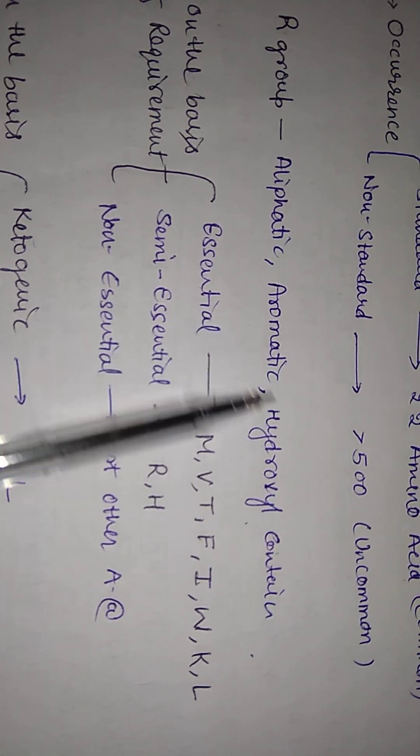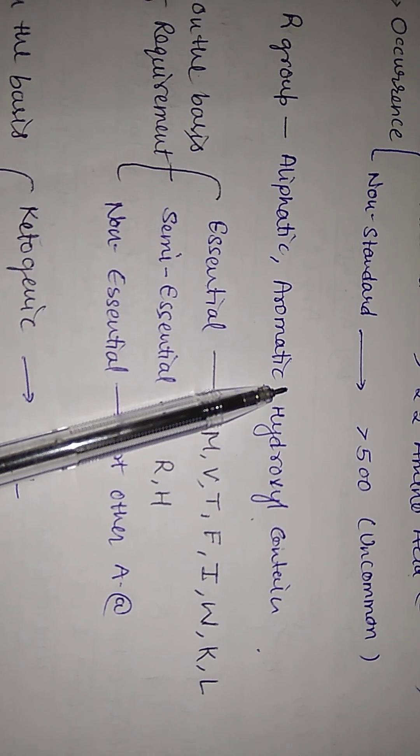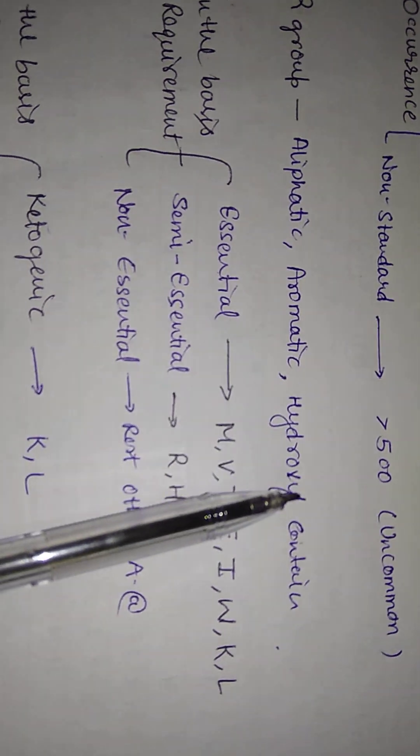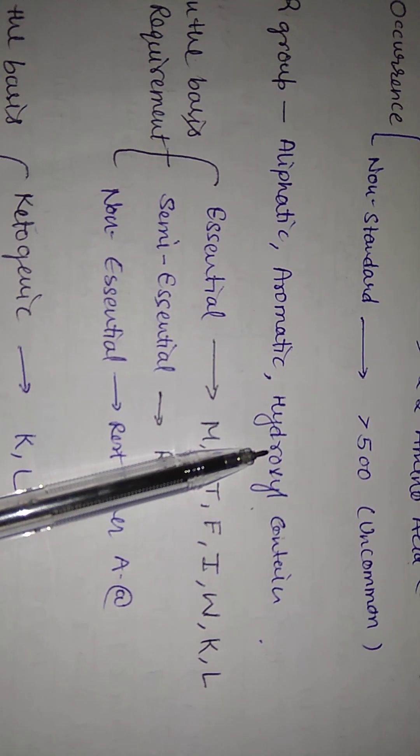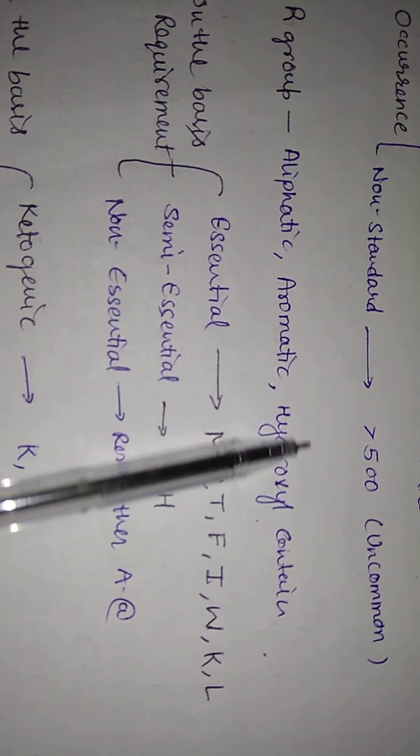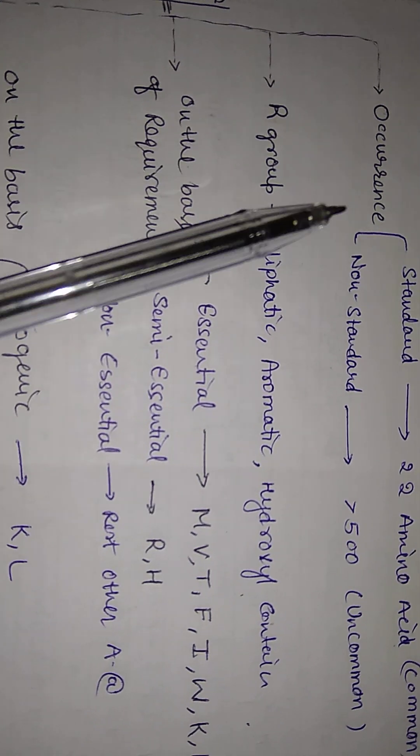Aromatic like tryptophan, phenylalanine, tyrosine. Hydroxyl-containing like serine and threonine. So this is how we do division by R group.